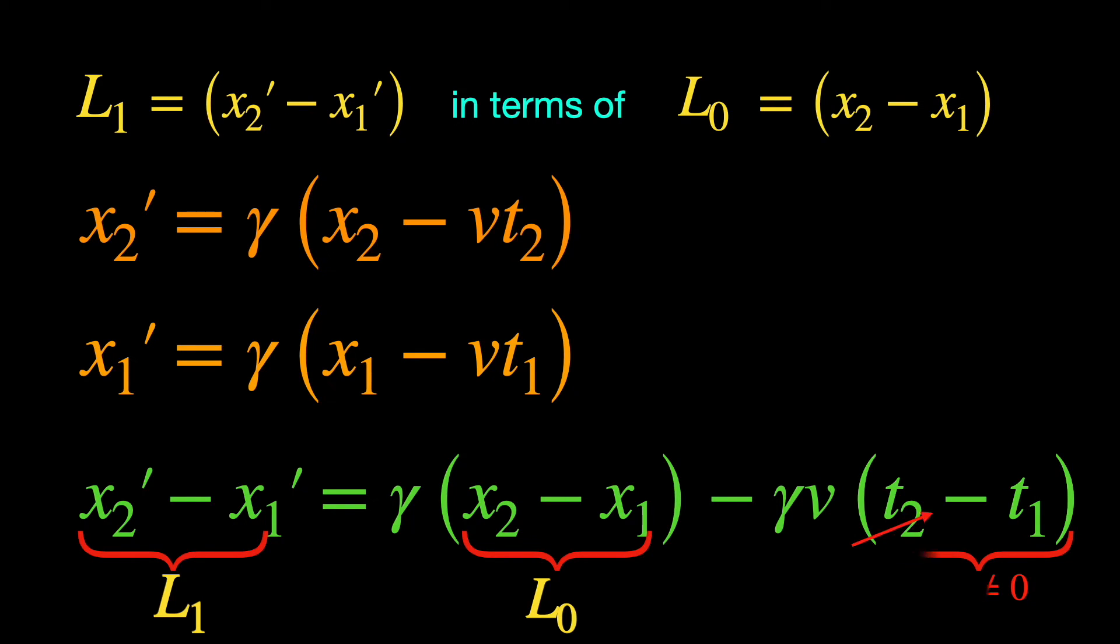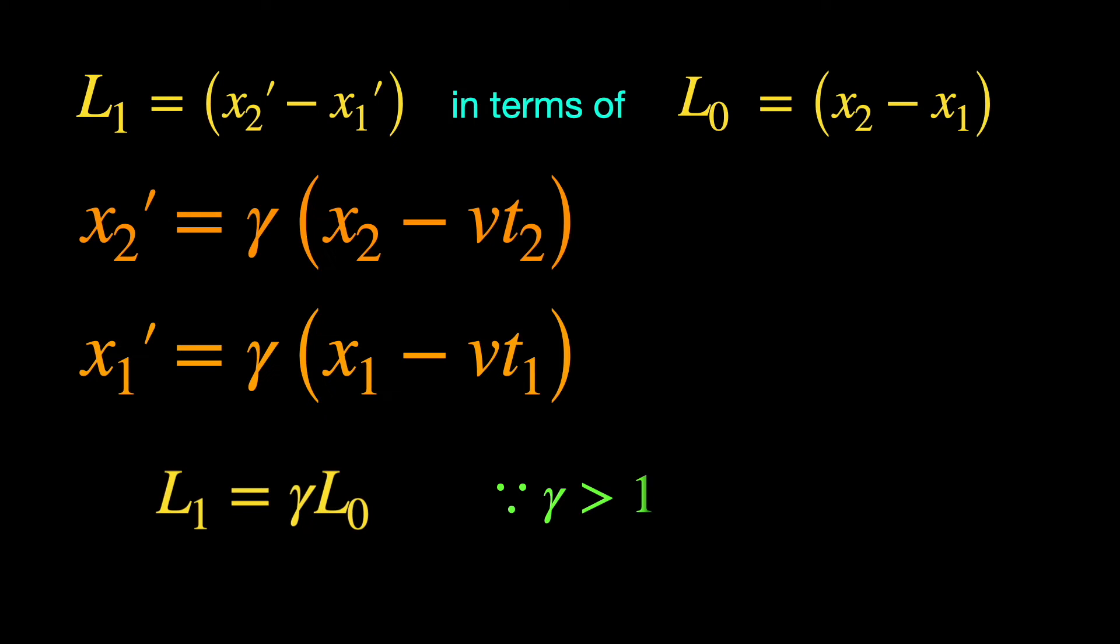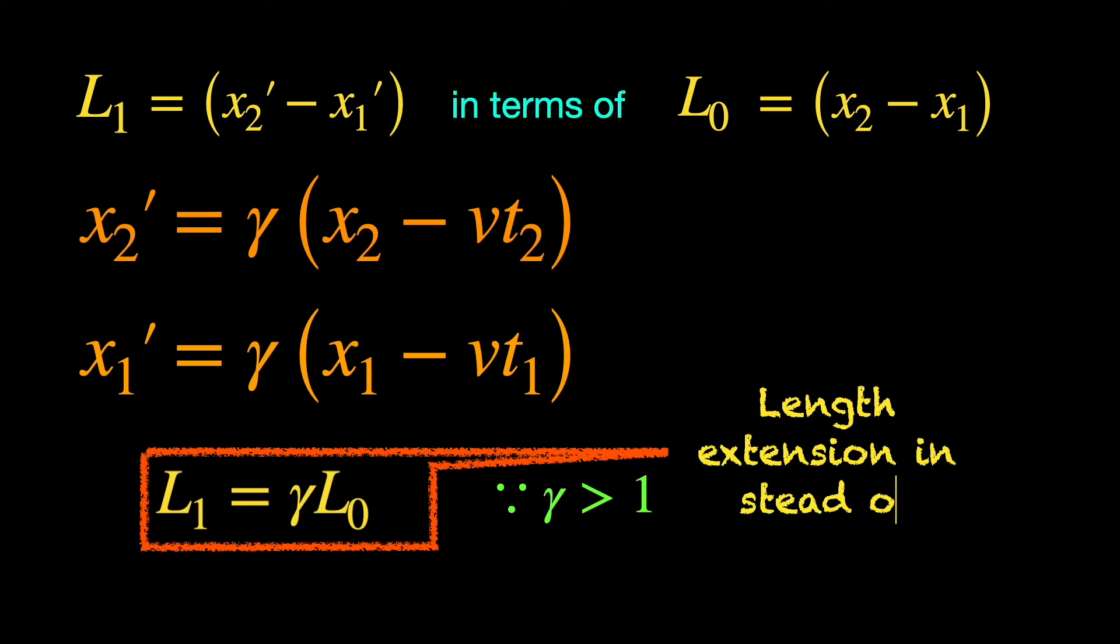If we by mistake put t2 minus t1 equals 0 here, well see what happens. We get L1 equals gamma L0, and because the Lorentz factor gamma is always greater than 1, this makes L1 longer than L0, meaning we have got length extension instead of length contraction, an obvious goof-up.